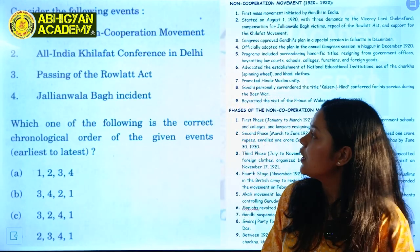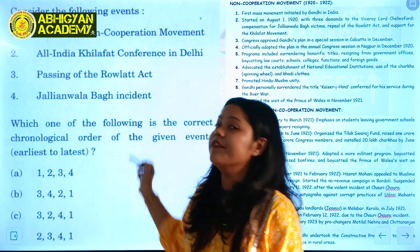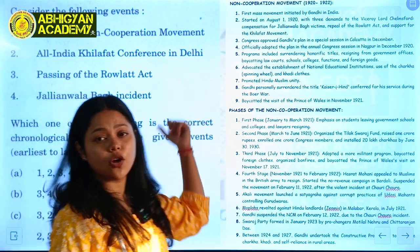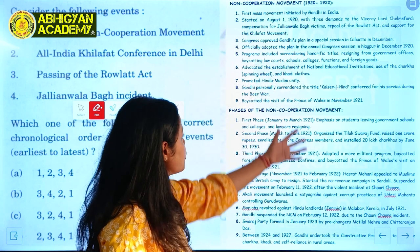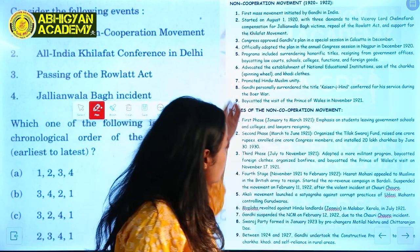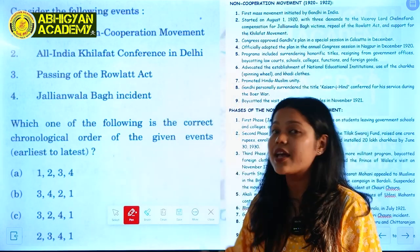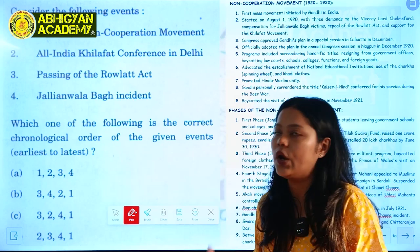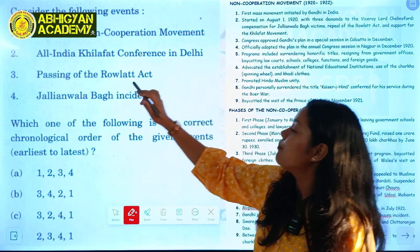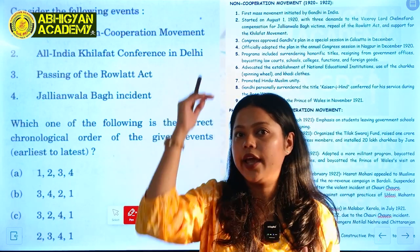The second question is from modern India. We have to correctly arrange the chronological order of four events: the launch of the Non-Cooperation Movement, the All India Khilafat Conference in Delhi, the passing of the Rowlatt Act, and the Jallianwala Bagh incident. Let's decide the chronology one by one.